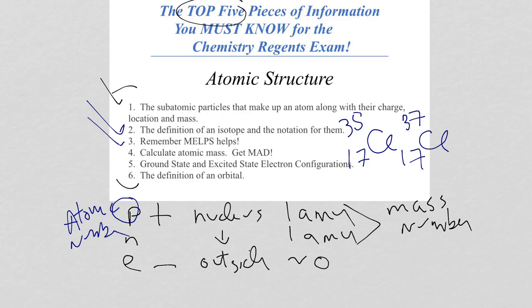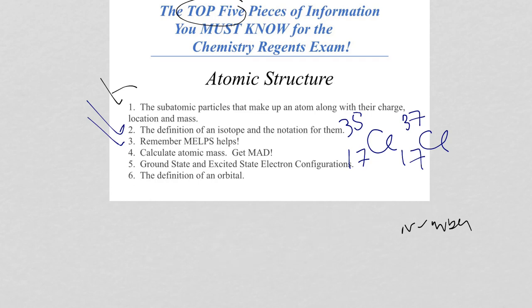For number three, remember MELPS helps. MELPS. So let me erase this, and let's write down what MELPS means. MELPS is just short for metals, electrons, lose, they become positively charged, and the ions of metals are always smaller than their parent atoms. So MELPS, M-E-L-P-S is just to help you remember this information.